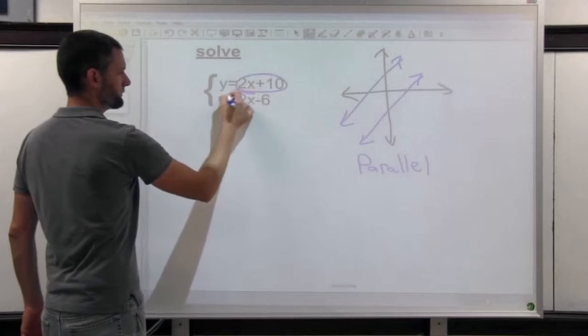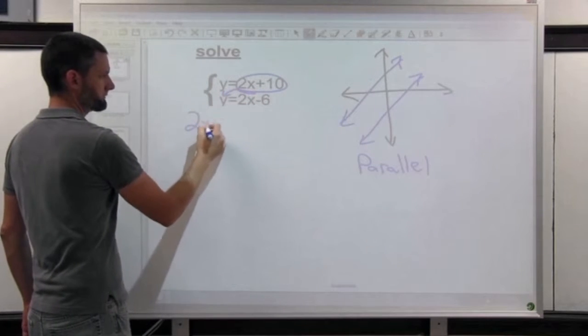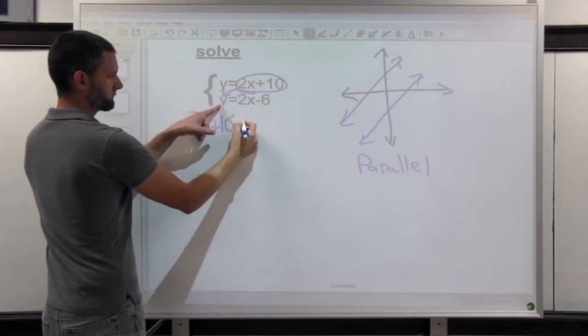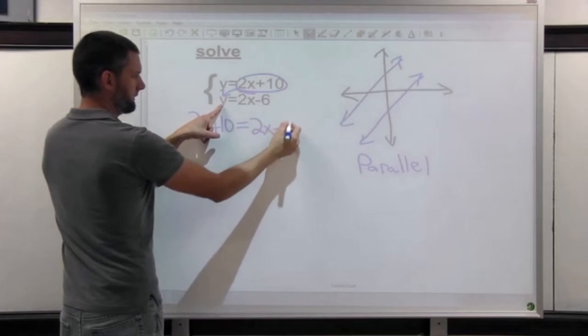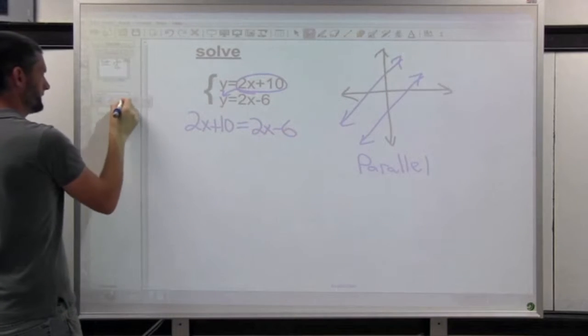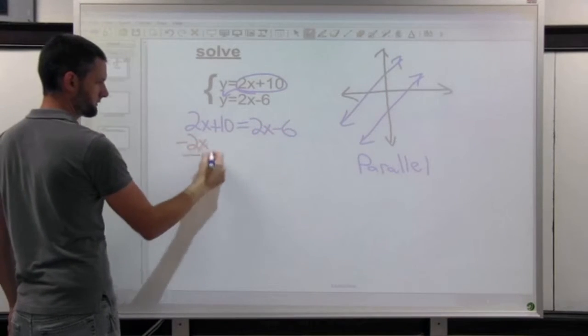So let's see what happens when we try to solve. I'm going to use substitution because this one's got y equals in it. And then I'm going to go ahead and try to cancel. Go ahead and do this.